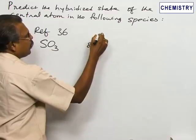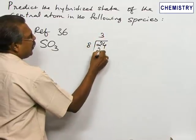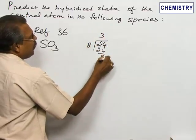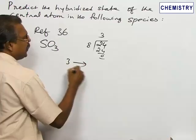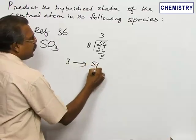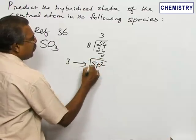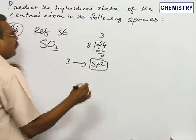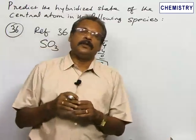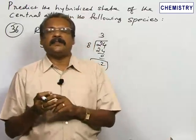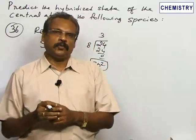The quotient is 3 and there is no remainder. 3 hybrid orbitals are obtained from SP2 hybridization only. Therefore, in SO₃ also, the type of hybridization is SP2.